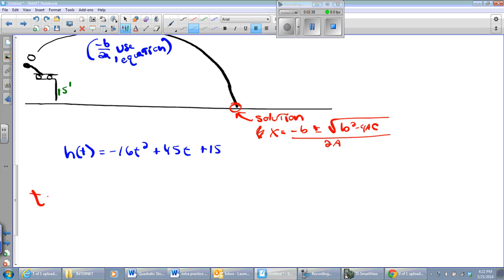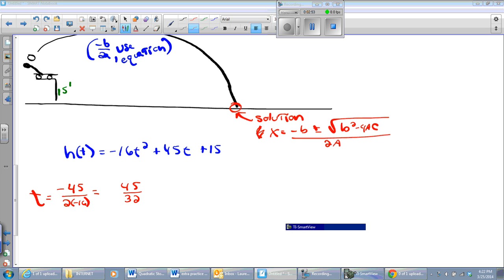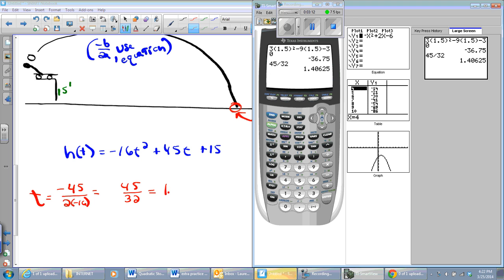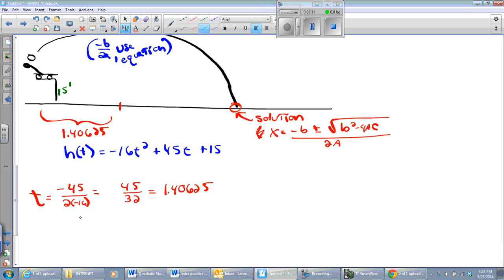Now, x equals negative b plus or minus the square root of b squared minus 4ac all over 2a. Chris, are you listening? Don't forget the over 2a part, sweetie. Alright. Now, I know that to do the vertex, I'm going to need two coordinates. I'm going to need the negative b over 2a. But to get the other coordinate, I have to use the equation.